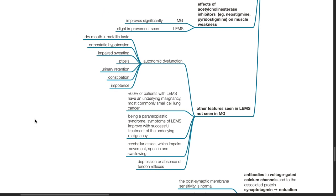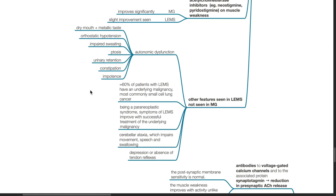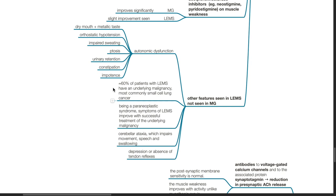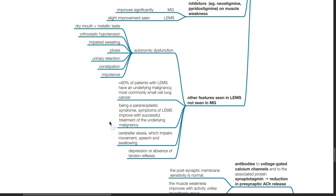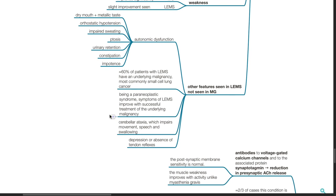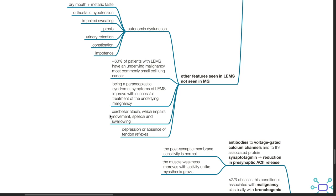Other features seen in LEMS not seen in myasthenia gravis. There may be autonomic dysfunction in LEMS. The patient may present with dry mouth with metallic taste, orthostatic hypotension, impaired sweating, ptosis, urinary retention, constipation, and impotence. About 60% of patients with LEMS have an underlying malignancy, most commonly small cell lung cancer. Being a paraneoplastic syndrome, symptoms of LEMS improve with successful treatment of the underlying malignancy. Cerebellar ataxia, which impairs movement, speech, and swallowing may occur in LEMS but not seen in MG. There may be depression or absence of tendon reflexes in LEMS.